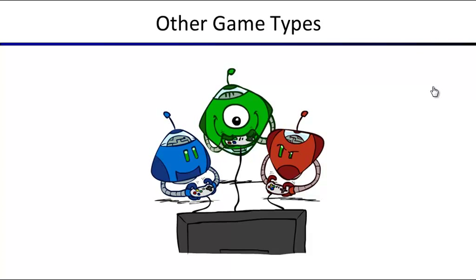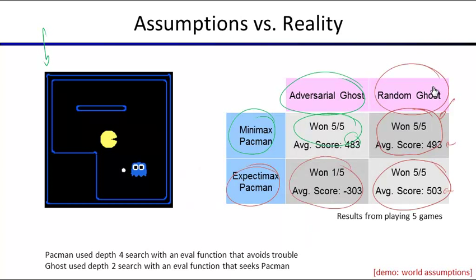A student asks: is expectimax deterministic? If so, how did it win one of the games against an adversarial ghost? The instructor responds: Pac-Man's strategy would be fixed, so it's probably a tie-breaking or initialization issue — either the ghost gets initialized in different spots or there's a tie-breaking variation. Good observation.